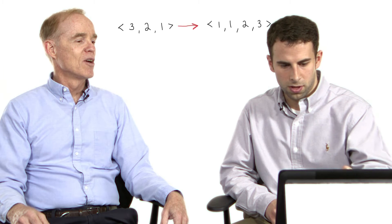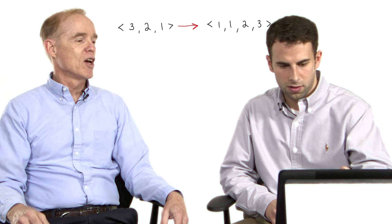So once again, if we started with 3, 2, 1, how about an output that is 1, 1, 1, 1, 1, 2, 3? So we have 3, 2, 1 and that's going to map to 1, 1, 2, 3, something like that? Yeah, sure.